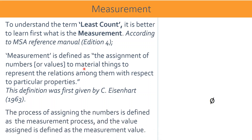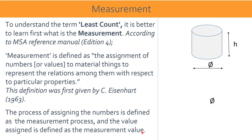The process of assigning the numbers is defined as the measurement process, and the value assigned is defined as the measurement value. An example is given of a physical part called a cylinder having dimensions of height.